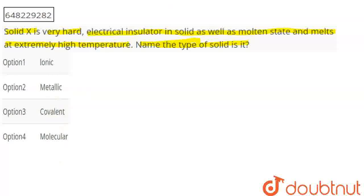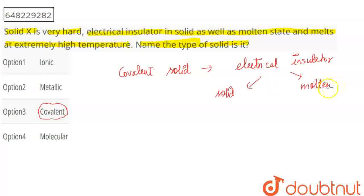Electrical insulator solids are your covalent solids. If I talk about covalent solids, the electrical insulator will be in solid as well as molten state. The insulator is one in which heat and electricity will not pass, so it's non-conducting.